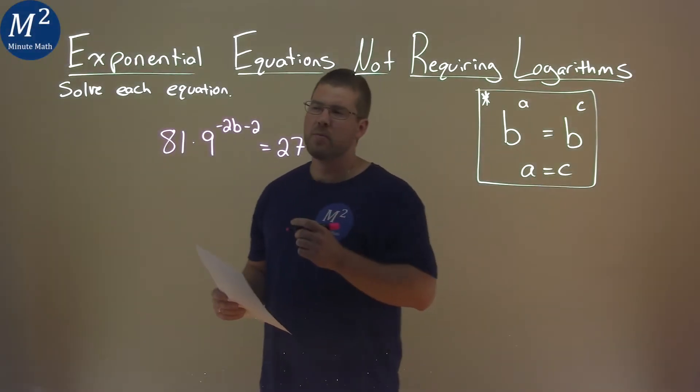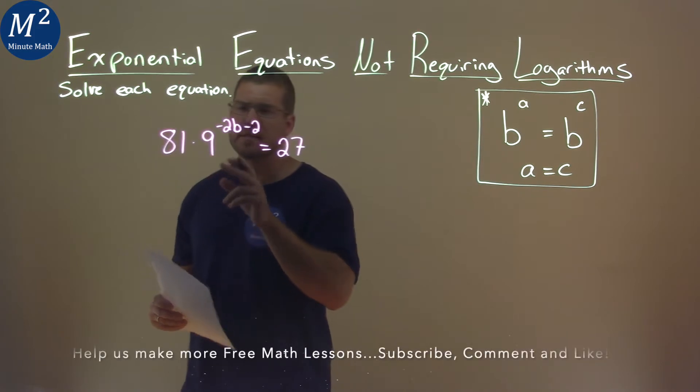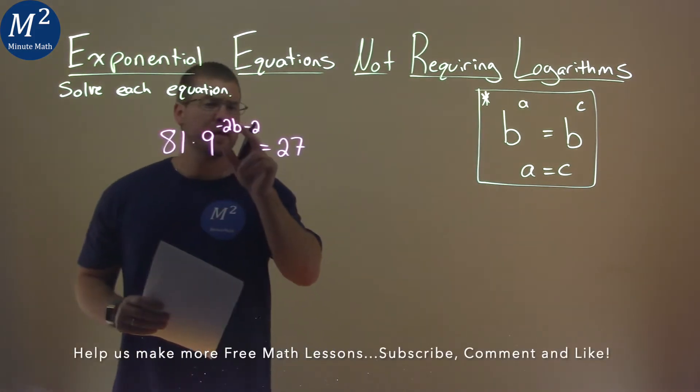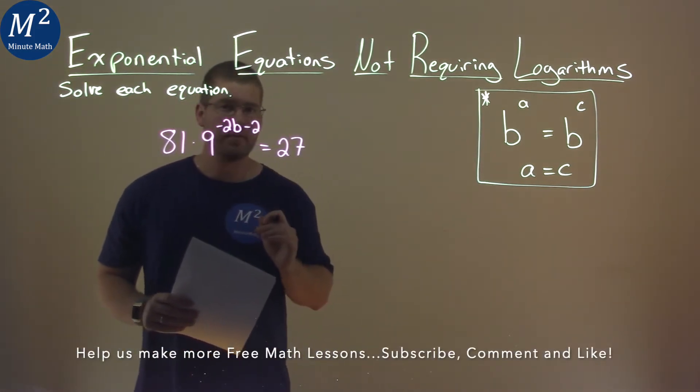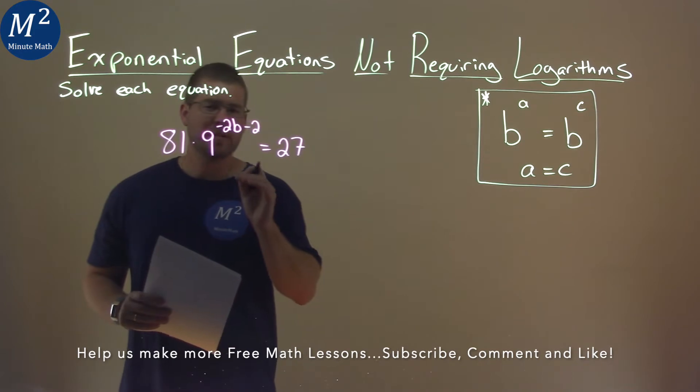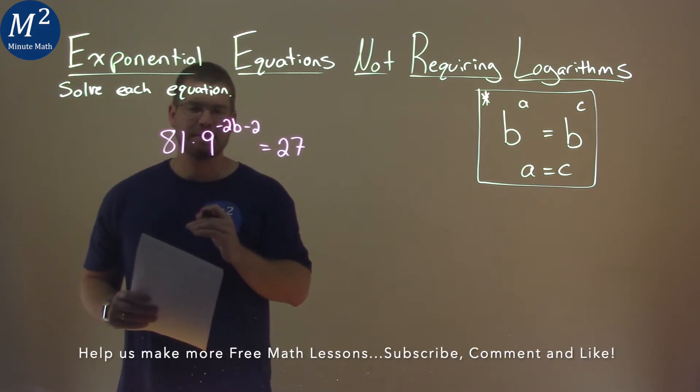We're given this problem right here: 81 times 9 to the negative 2b minus 2 equals 27, and we want to solve this equation.